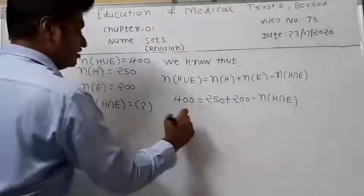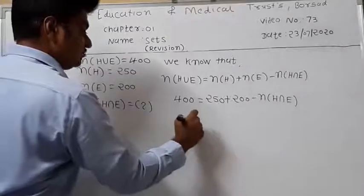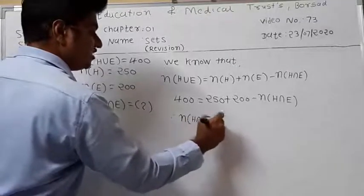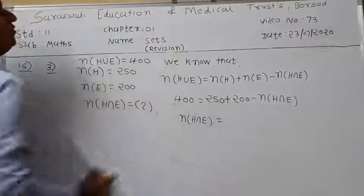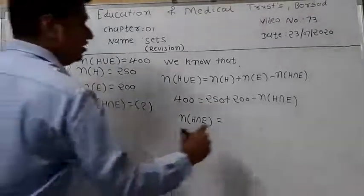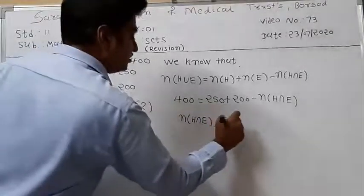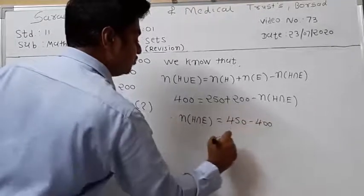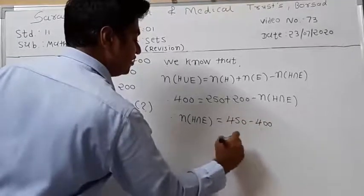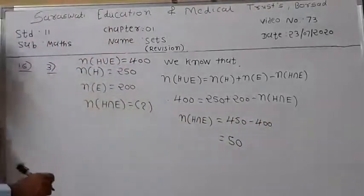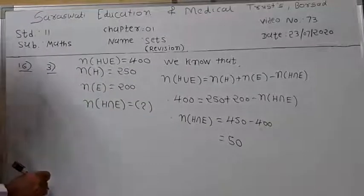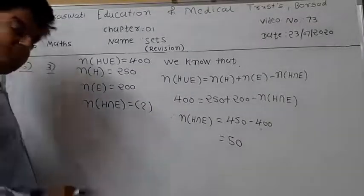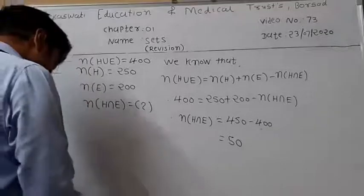Bringing N of H intersection E to the opposite side and changing the sign: N of H intersection E equals 250 plus 200, that is 450, minus 400. So the value of N of H intersection E is equal to 50.